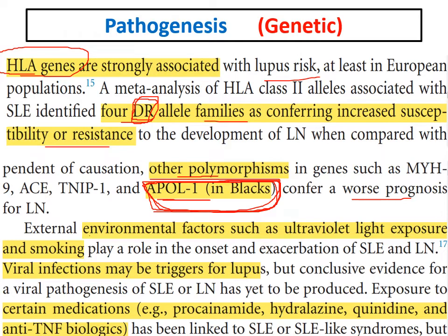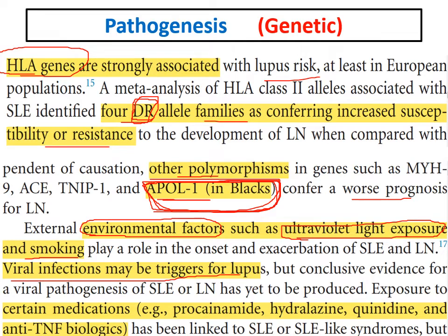Environmental factors also play a role in systemic lupus. These include ultraviolet exposure — we usually prescribe sunscreens to avoid UV light — and smoking, which increases the risk of relapses. Viral infections may be triggers, and certain drugs can induce lupus, including procainamide, hydralazine, quinidine, and anti-TNF biological therapies.